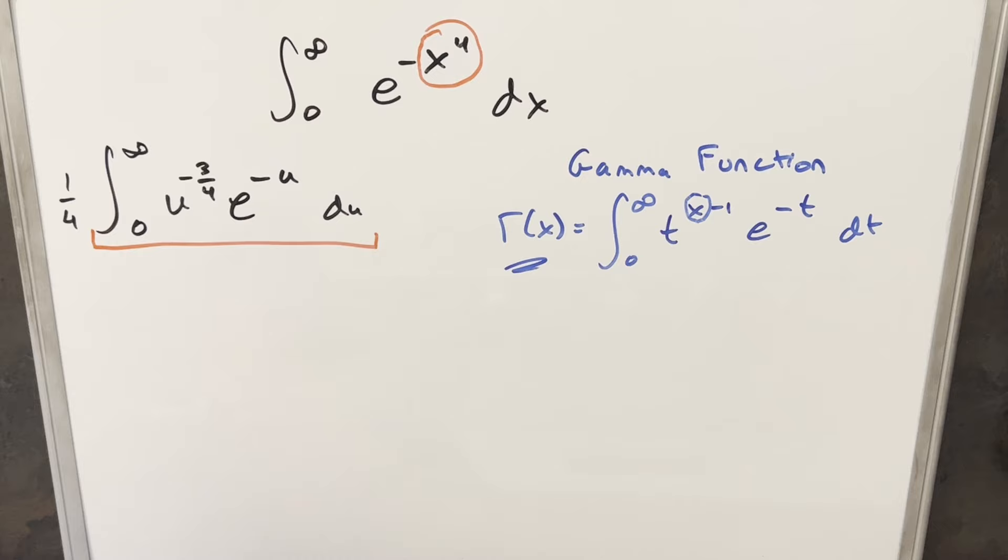The gamma function is an extension of the factorial. So sometimes for positive integer values for x, we could just go ahead and calculate this with the factorial. There's some other values that we can calculate. There's some other values that are difficult to calculate. There's some values where it's undefined.